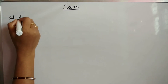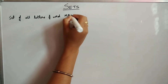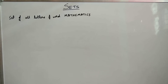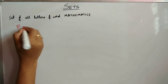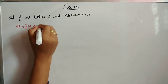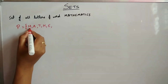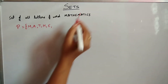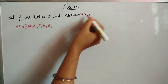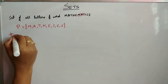Consider the set of all letters of the word 'mathematics'. In roster form the elements are M, A, T, H, E — then we encounter M again, but M is already present so we do not repeat it. Similarly A and T are already present. So the next new elements are I, C, S. In a set, elements are not repeated.